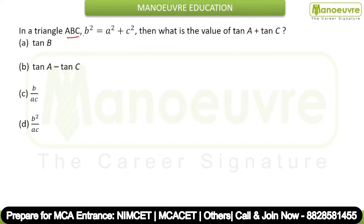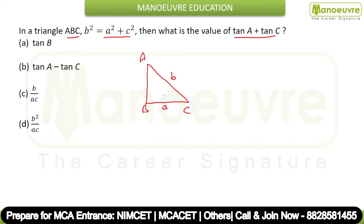In triangle ABC, B square is equal to A square plus C square, and we have to find the value of tan A plus tan C. For this type of question, we have a triangle A, B, C. The side opposite B is b, opposite A is a, and opposite C is c. Here B square equals A square plus C square, which means B is the hypotenuse and the triangle follows the Pythagoras rule.